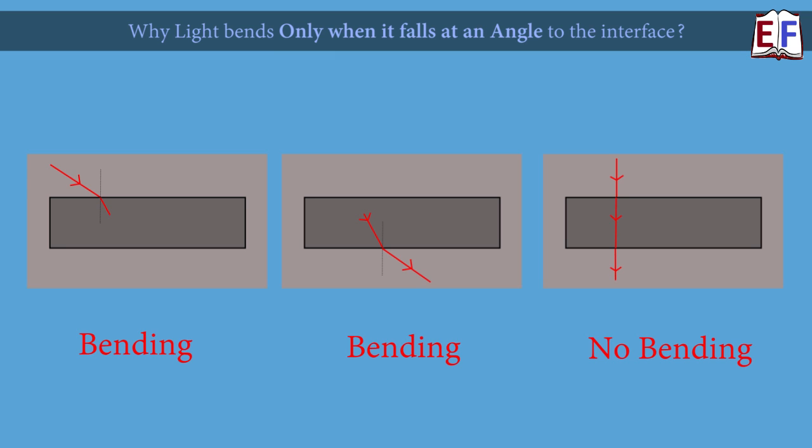We have read in our textbooks that light bends when it travels from one medium to another. We have also seen that light bends only when it falls at an interface at some angle. Have you ever thought why does light bend only when it falls at an angle to the interface and it doesn't bend when it is perpendicular to the surface?